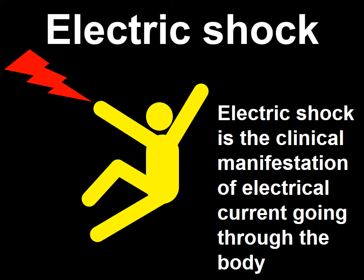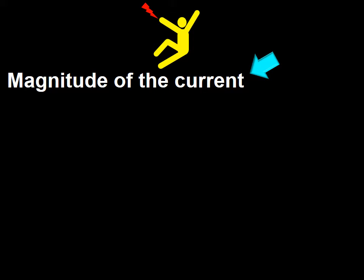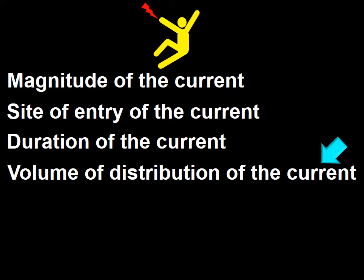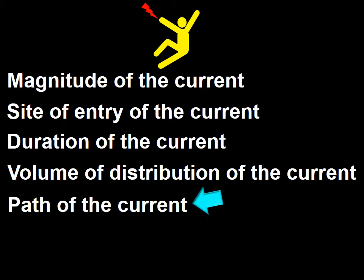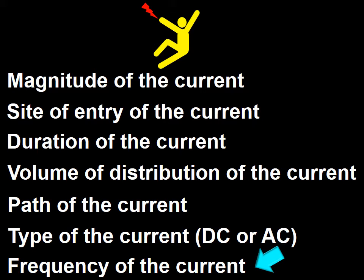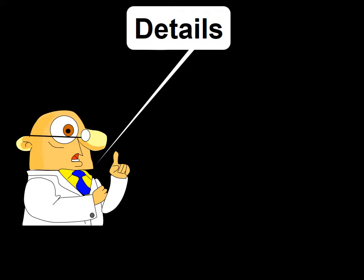The type and intensity of the clinical manifestations brought about by current going through the body depends on several factors. These factors are the magnitude of the current, the site of entry of the current, the duration of the current, the volume of distribution of the current within the body, the path of the current, the type of current — direct or alternating — and if alternating, the frequency of the current. In the next few minutes I will expand on each of these factors.